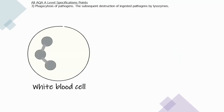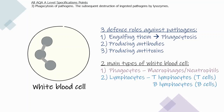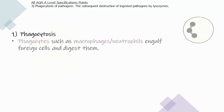White blood cells are key components of the immune system with three defence roles: engulfing pathogens (phagocytosis), producing antibodies, and producing antitoxins. There are two main types of white blood cells: phagocytes, which include macrophages and neutrophils, and lymphocytes, which are T lymphocytes and B lymphocytes. The process of phagocytosis involves macrophages and neutrophils engulfing foreign cells and digesting them.